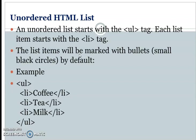We have small black circles as bullets by default, but we can change the list style. For example, the UL tag starts and ends; list elements use the LI tag. The first element is coffee, the second is tea, and the third is milk, each closed with the LI tag.